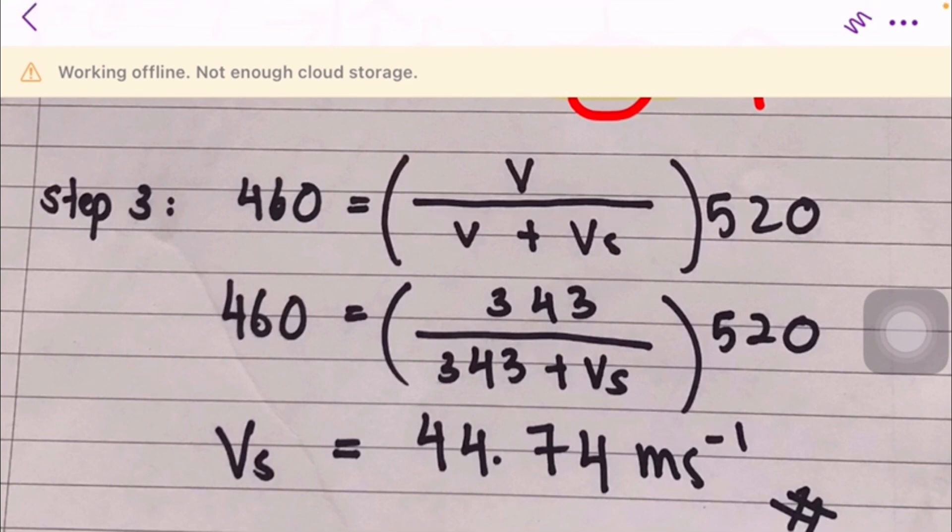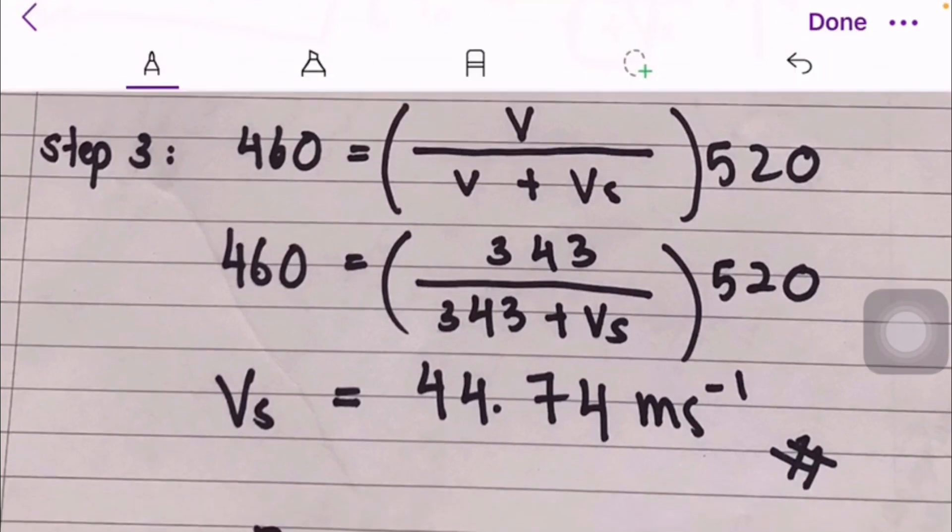Step three, after we know it's plus, we substitute all the values. 460 equals 343 over 343 plus vs times 520. We calculate and get vs equals 44.74 meters per second, so the answer is B.